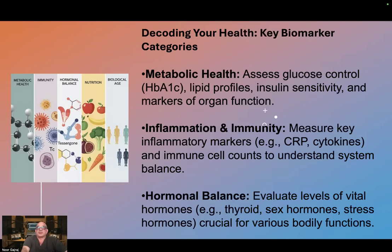Decoding your health — key biomarker categories. Metabolic health: assess glucose control, HbA1c, lipid profiles, insulin sensitivity and markers of organ function. Inflammation and immunity: measure key inflammatory markers such as CRP, cytokines and immune cell counts to understand system imbalance.